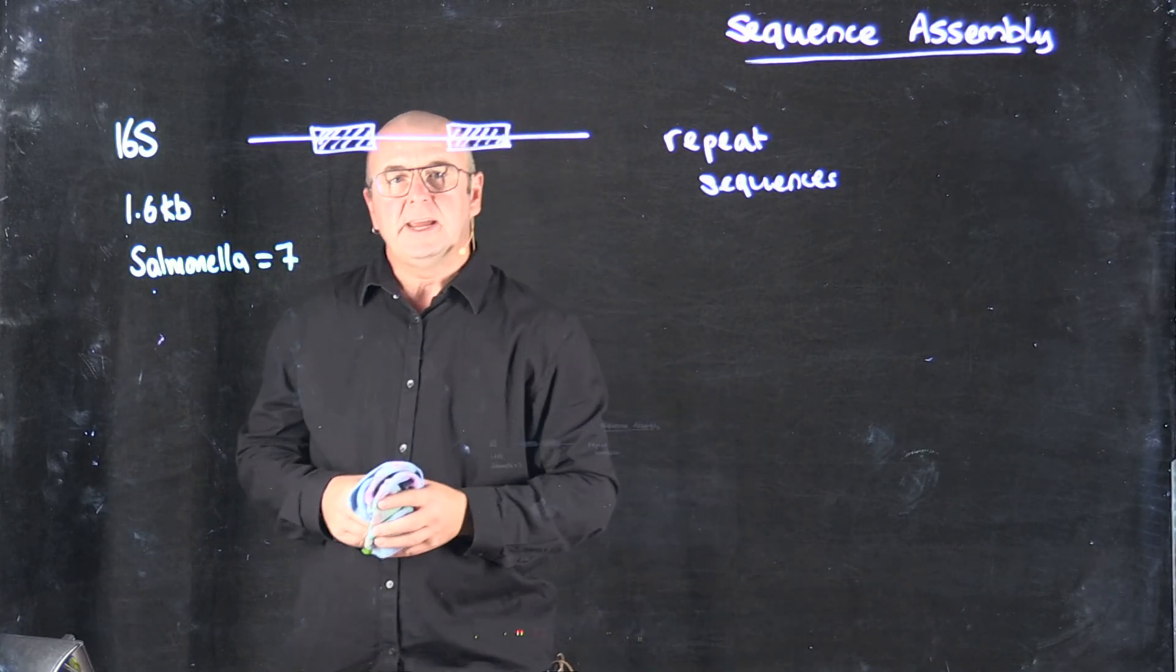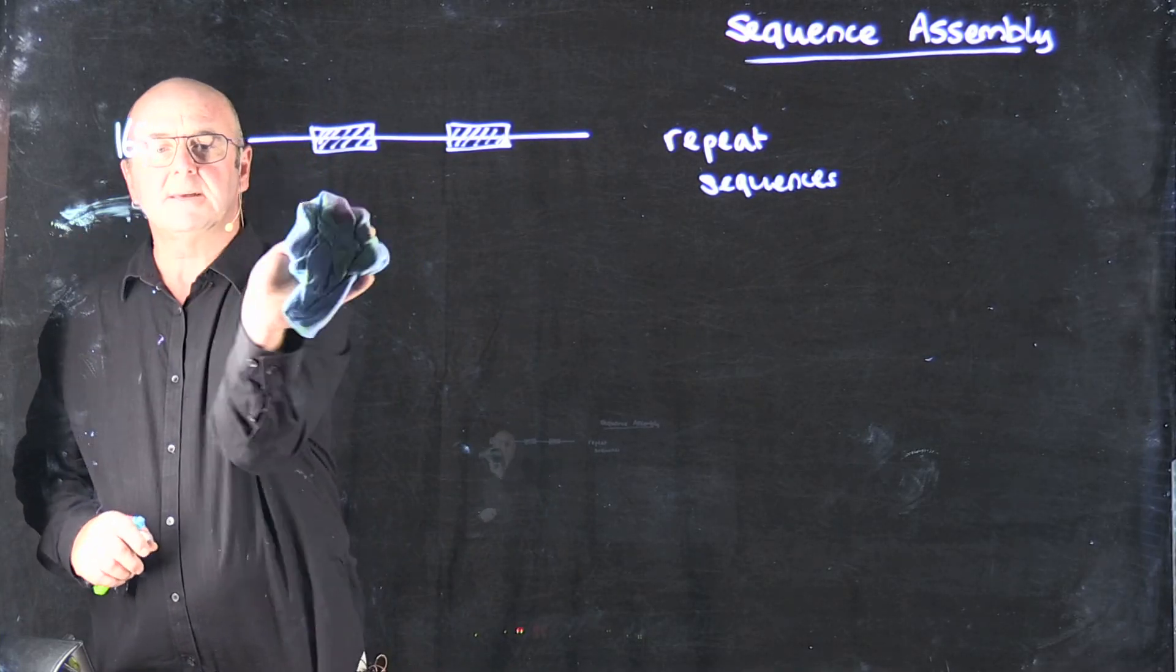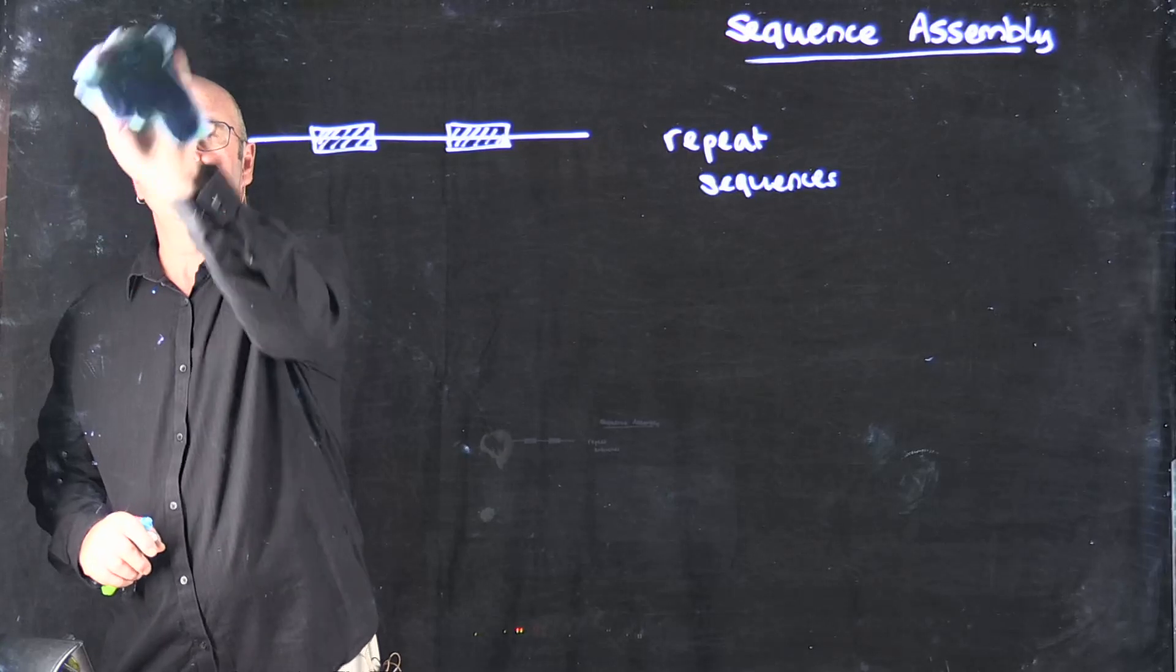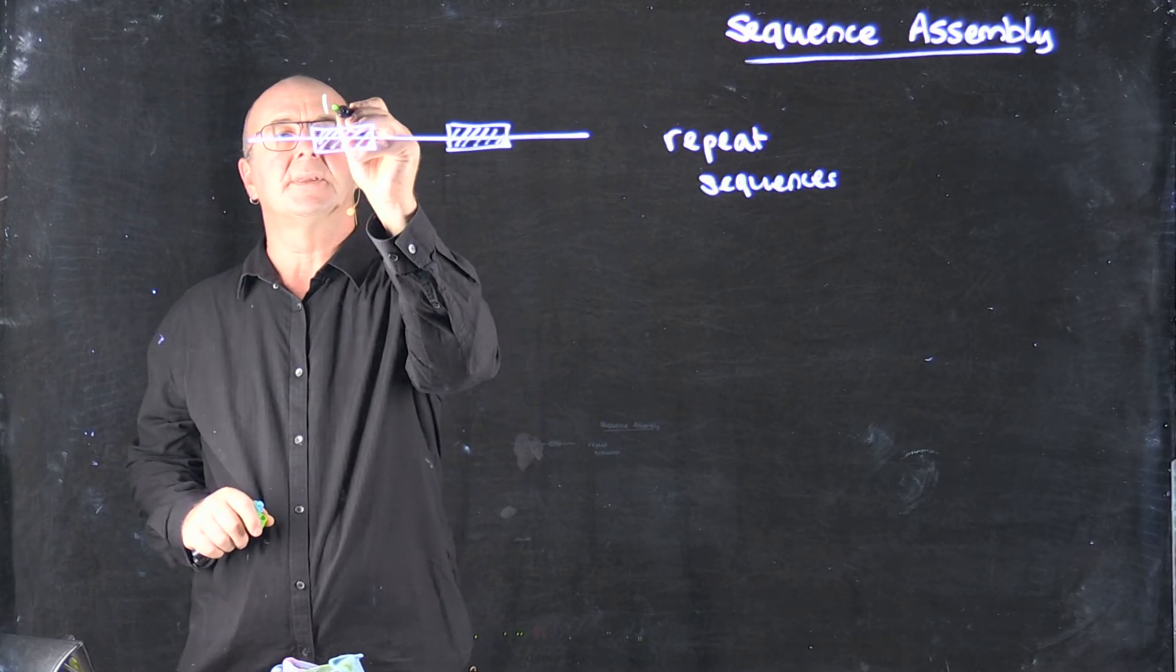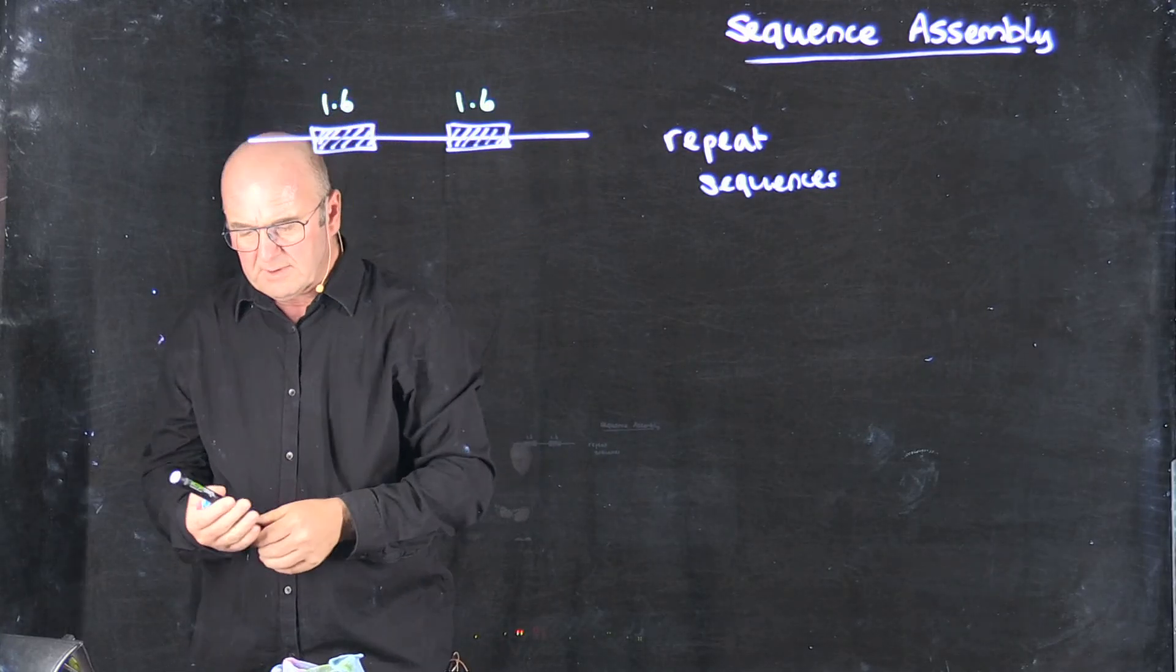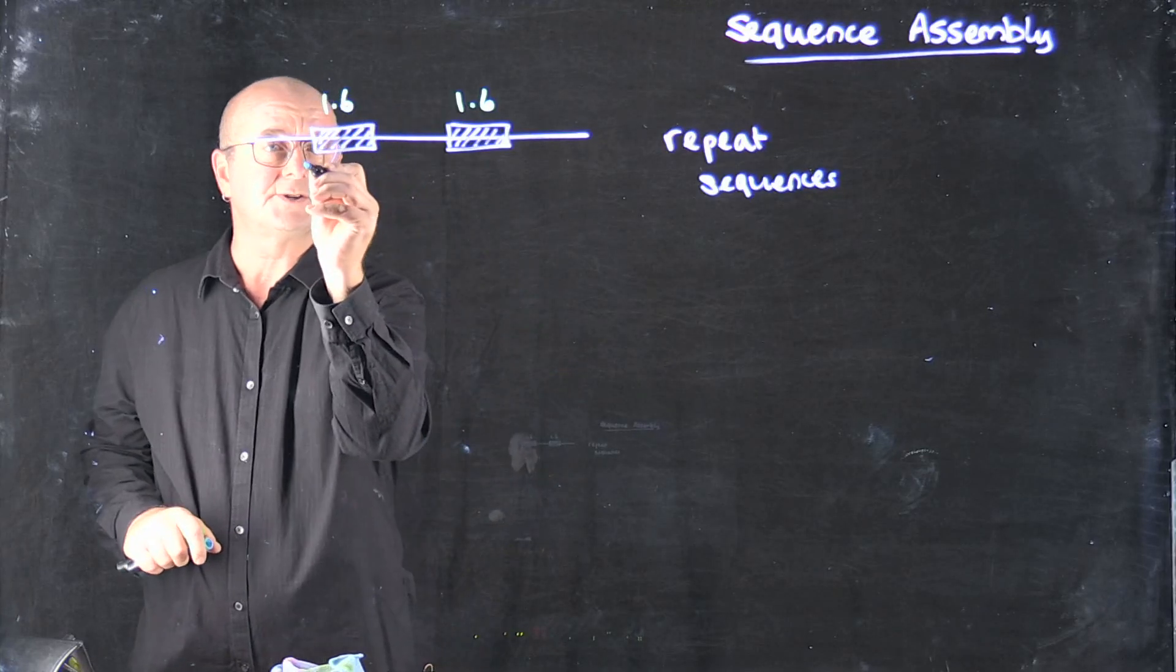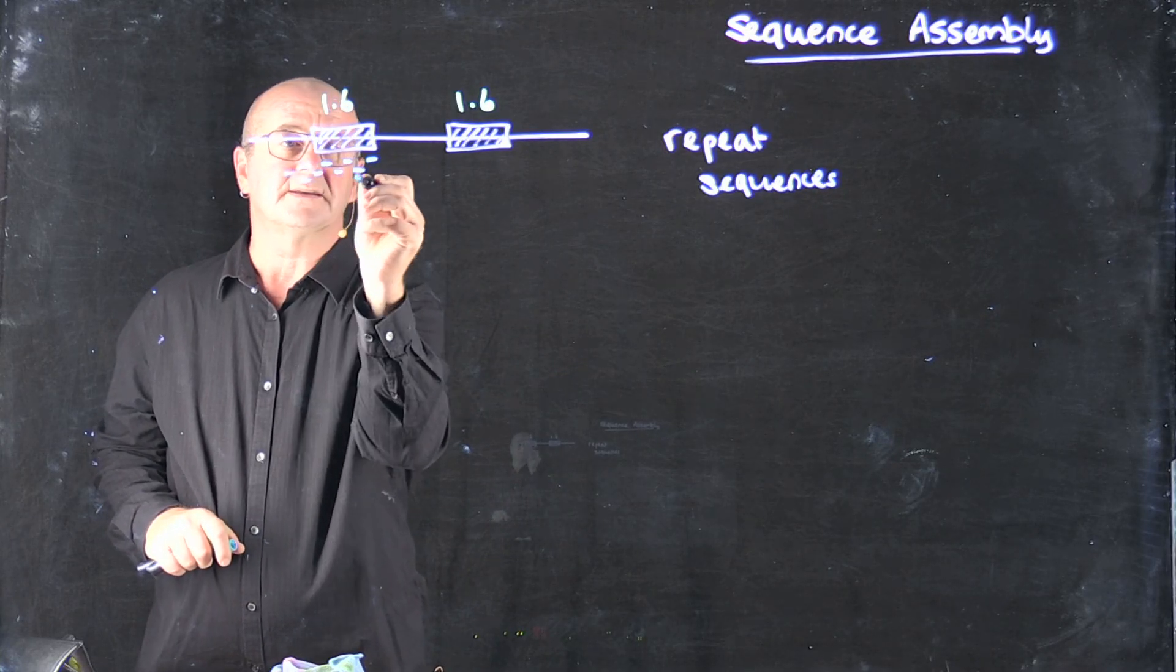So repeats cause a big problem for genome assembly. Because if we have a 1.6 kilobase region that occurs twice, when we're sequencing it with short read technology like Illumina, our reads are going to occur like this.